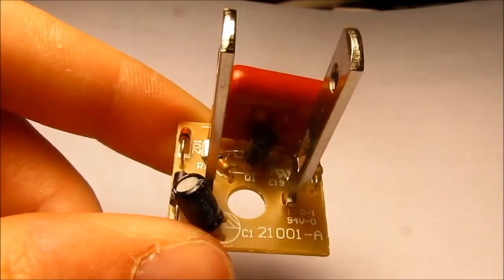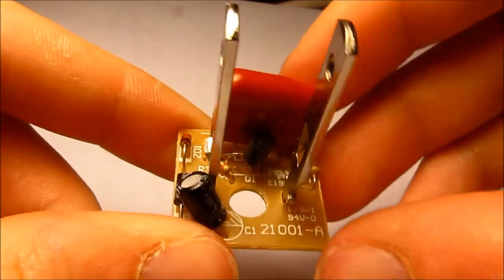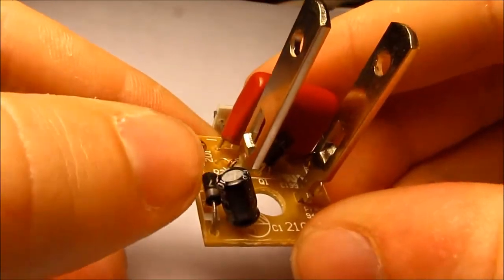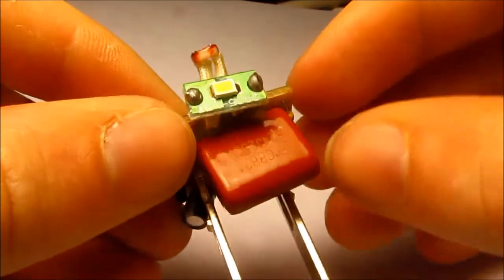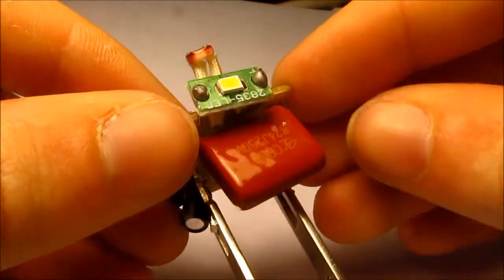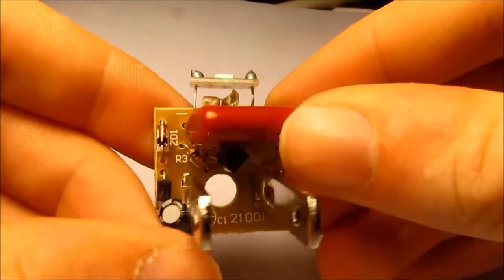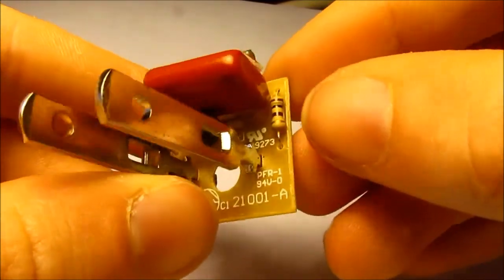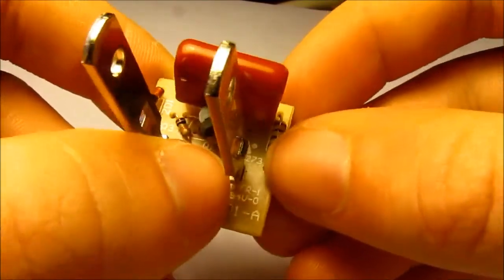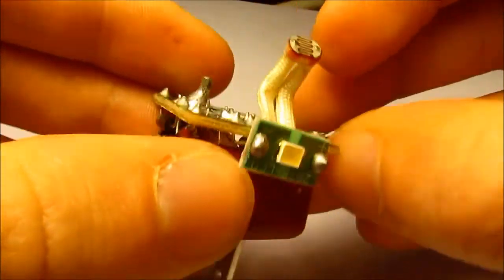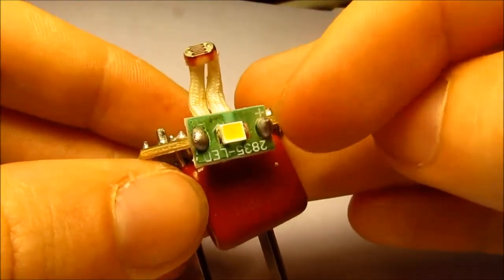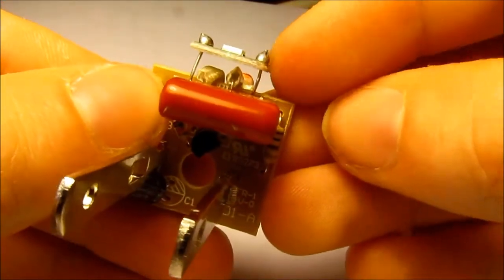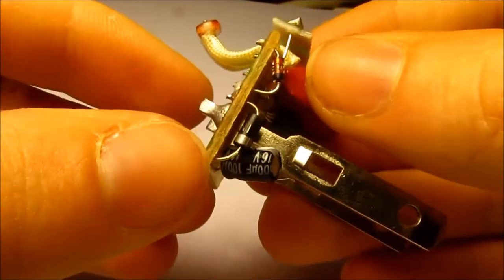Got the circuit board removed from the case and that's all there is. A tiny electrolytic, looks like two diodes, a larger plastic capacitor, three resistors, a transistor, the photoresistor, and the LED itself on its own tiny little board mounted to the main board.